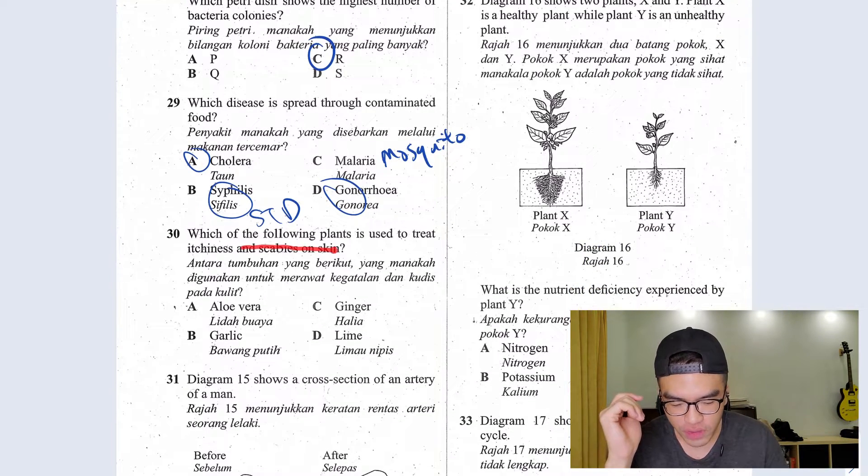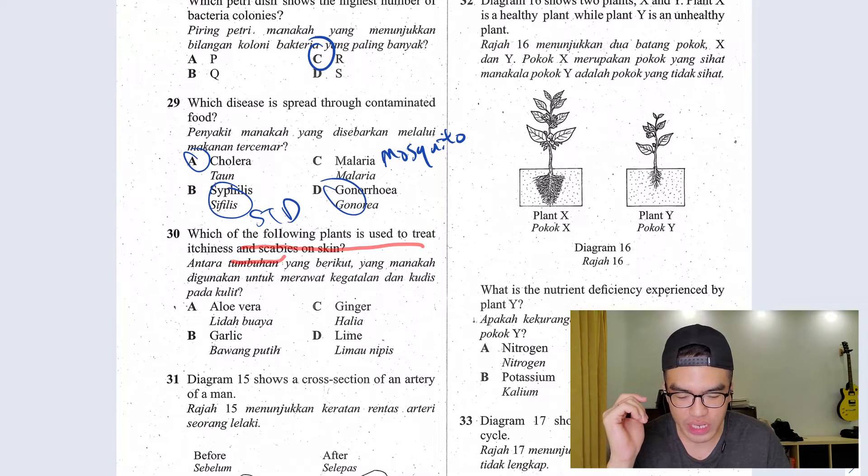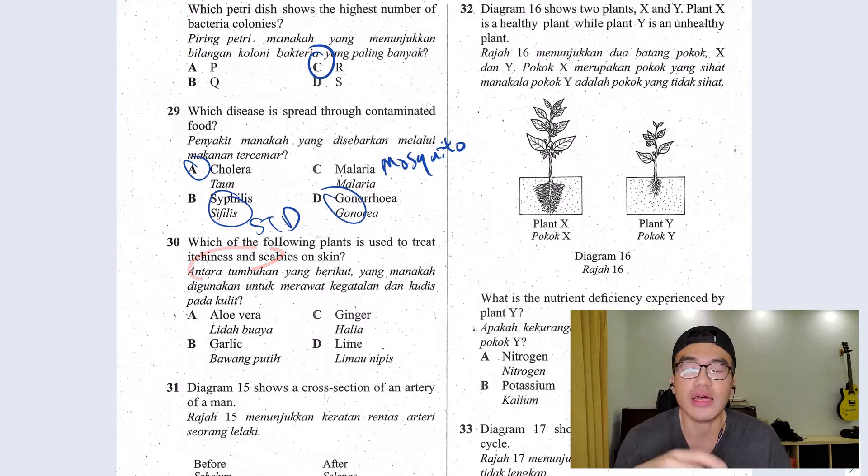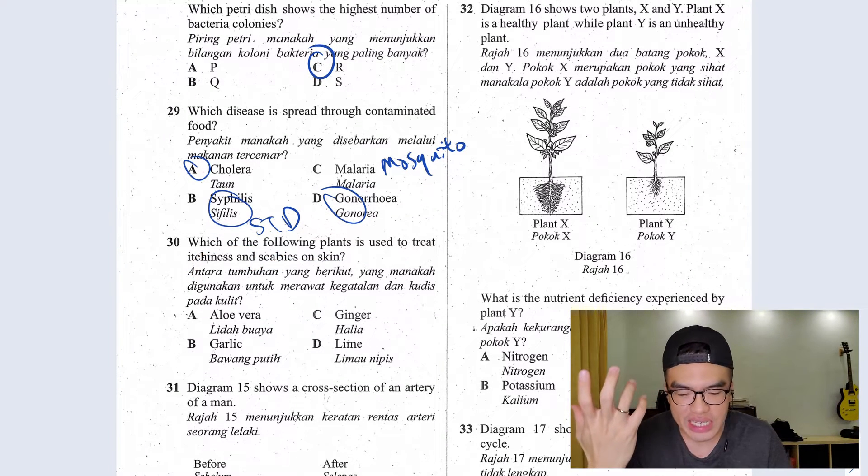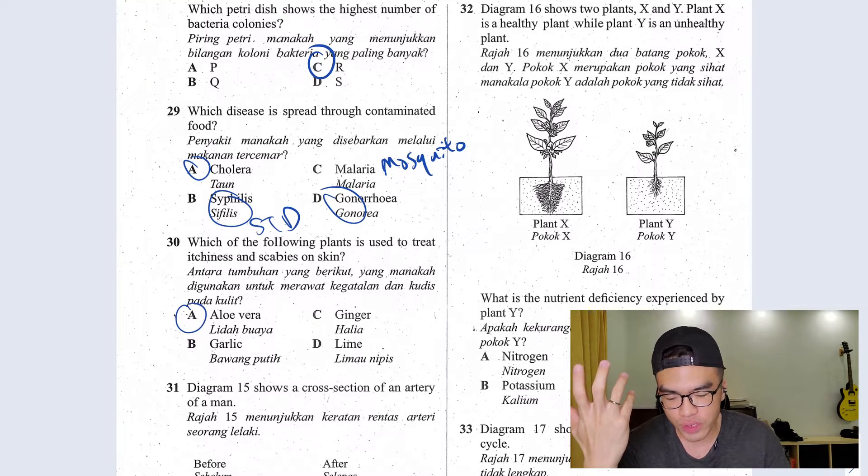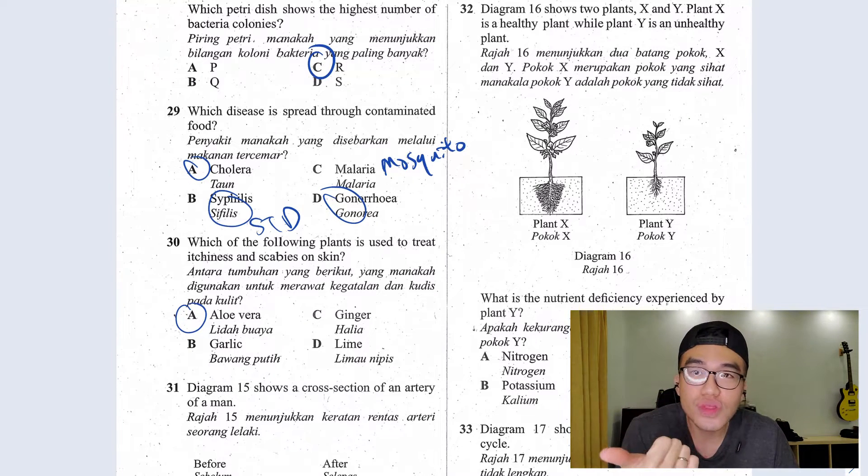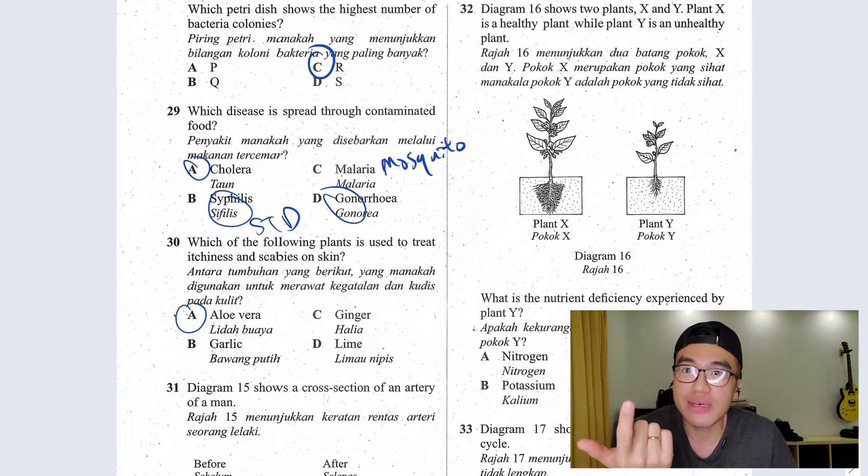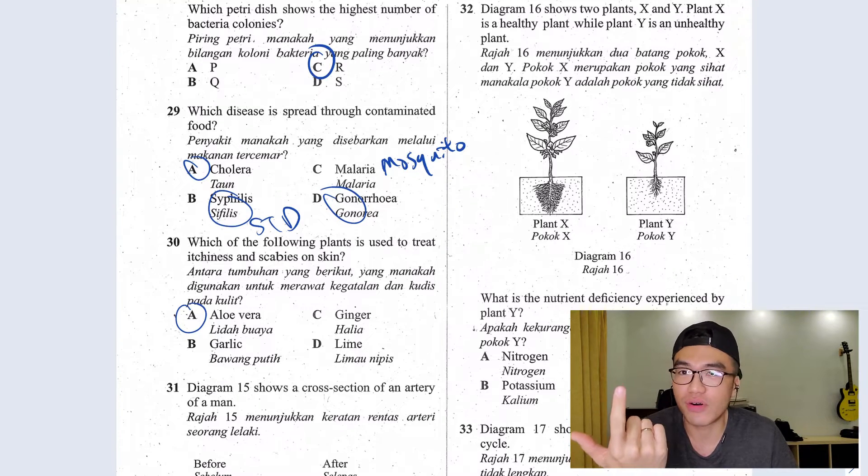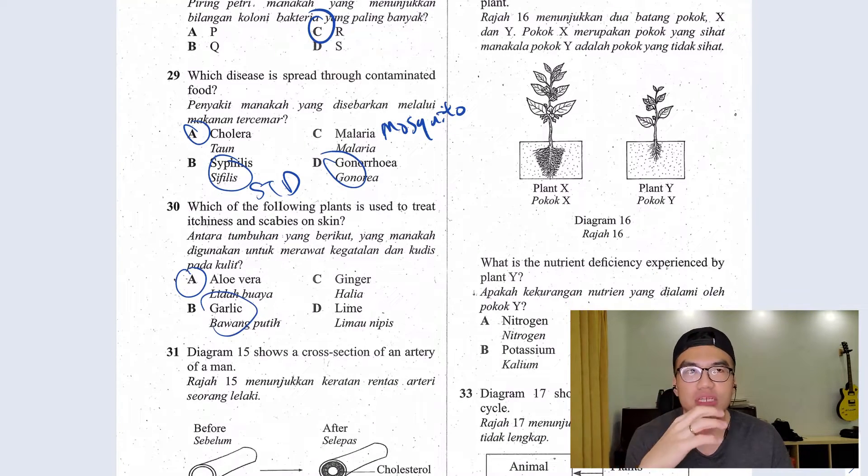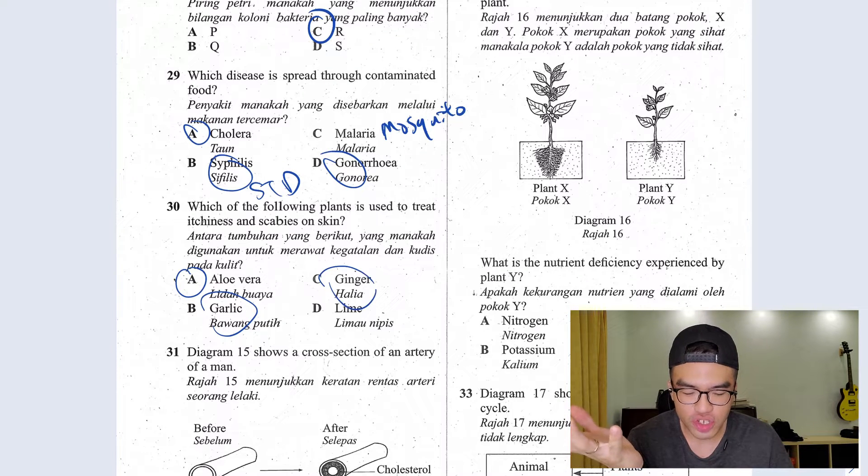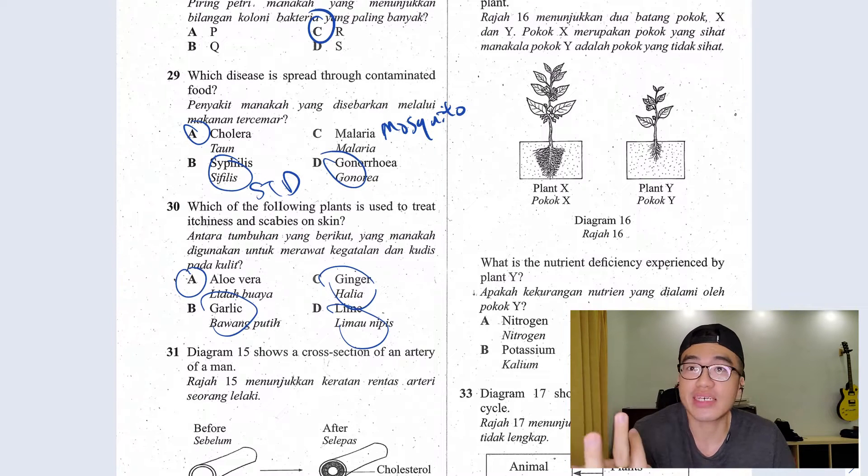Question 30, which of the following plants is used to treat itchiness and scabbies on skin? When you need to treat skin diseases, most likely we would use aloe vera. Not only they will soothe the skin, they will also kill bacteria or microorganism. Garlic is mostly for high blood pressure, ginger is mostly for fever, lime is mostly for flu because it has a lot of vitamin C.